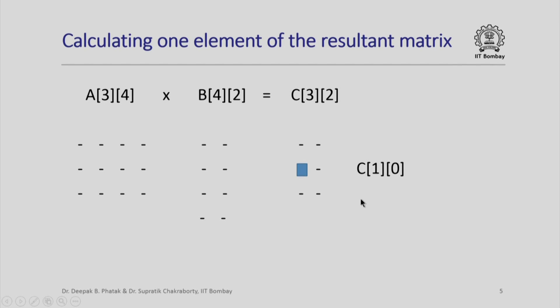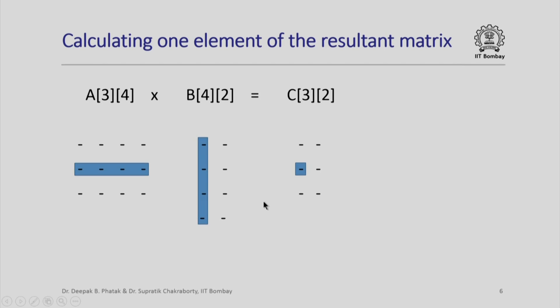Consider for example the calculation of the first row, 0th column element. This is the first row, this is the 0th column. If I want to calculate the value of this, I will actually have to consider the first row of matrix A and 0th column of matrix B. This is the row that I will need to consider and this is the column that I need to consider in order to get this value.